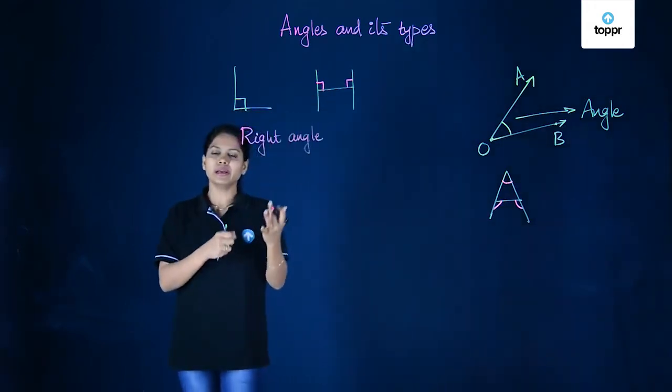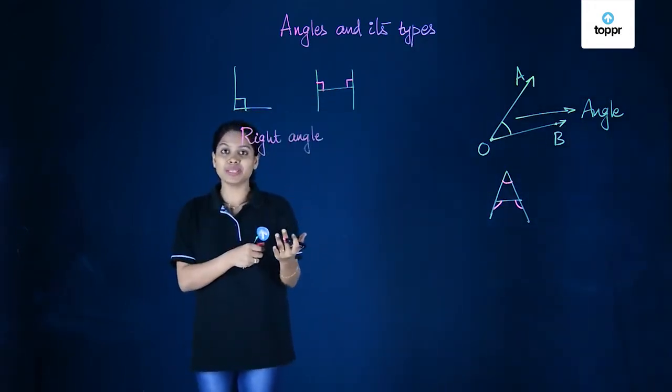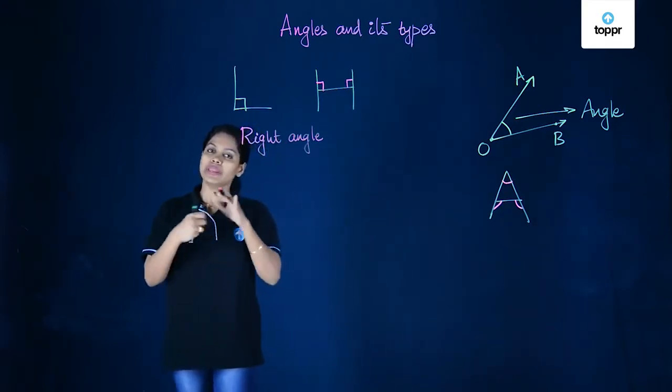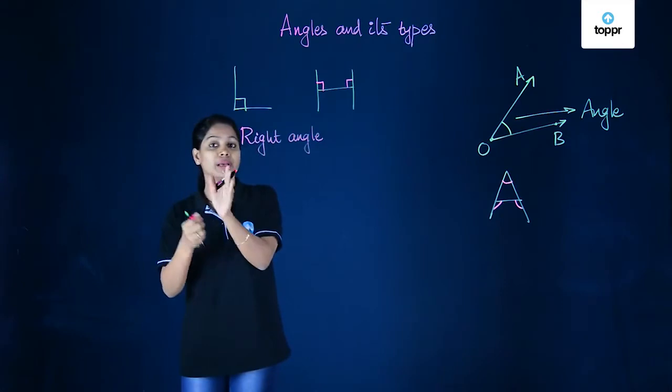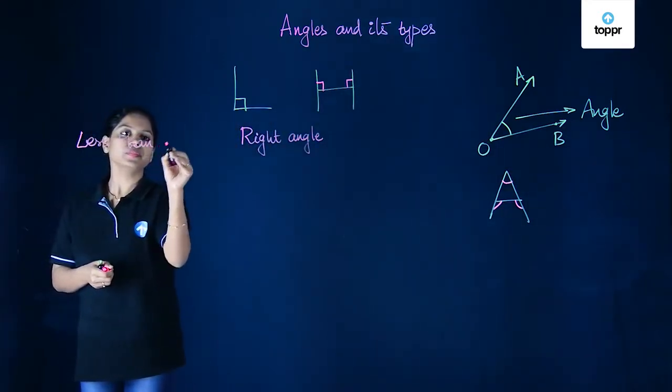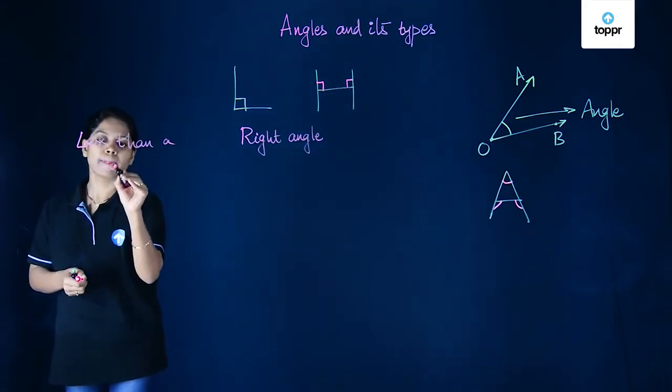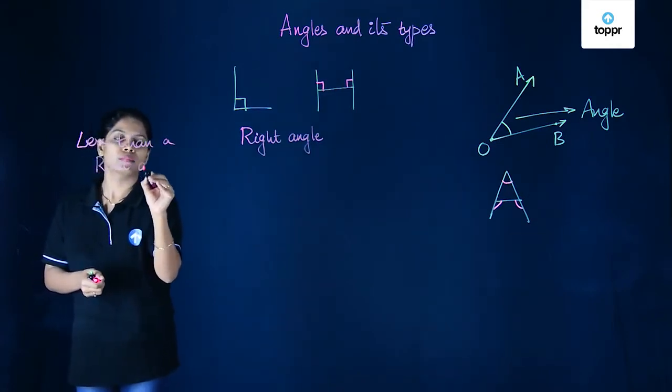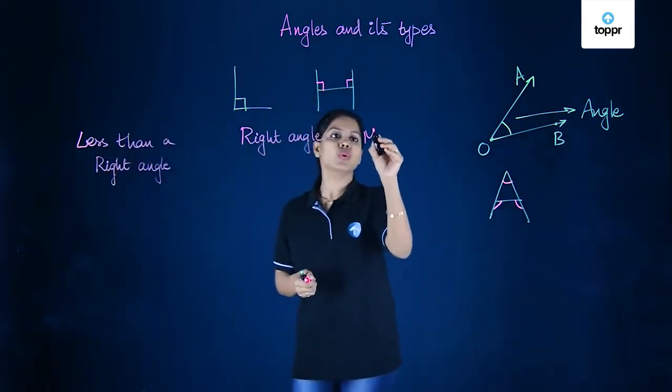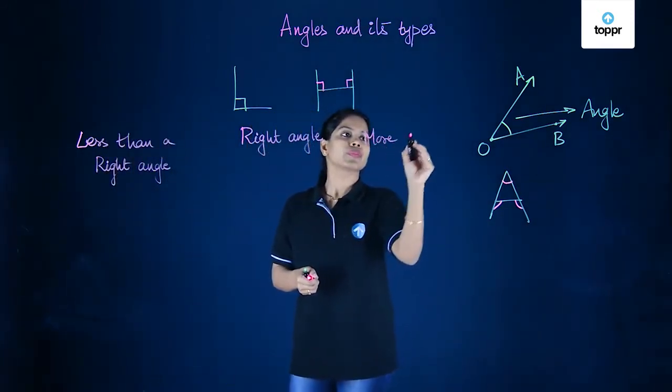Because it is a right angle, we categorize the remaining angles based on this. Any angle could be less than a right angle or more than a right angle. So we could have an angle less than a right angle, or we could also have an angle that's more than a right angle.